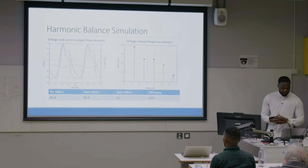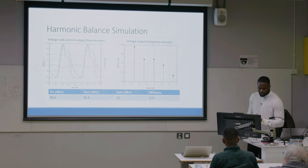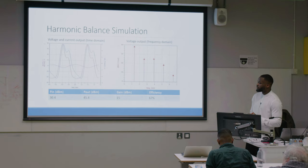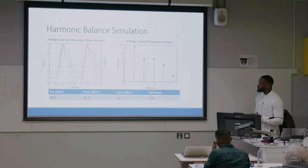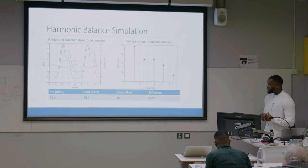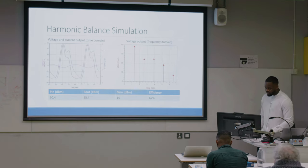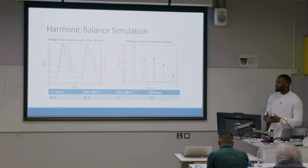From there I did a harmonic balance simulation, which shows the voltage inputs and outputs to confirm the amplifier is working. The simulation shows that an efficiency of 67 percent is possible and a gain of 15 dB is achievable, which meets the design requirements.